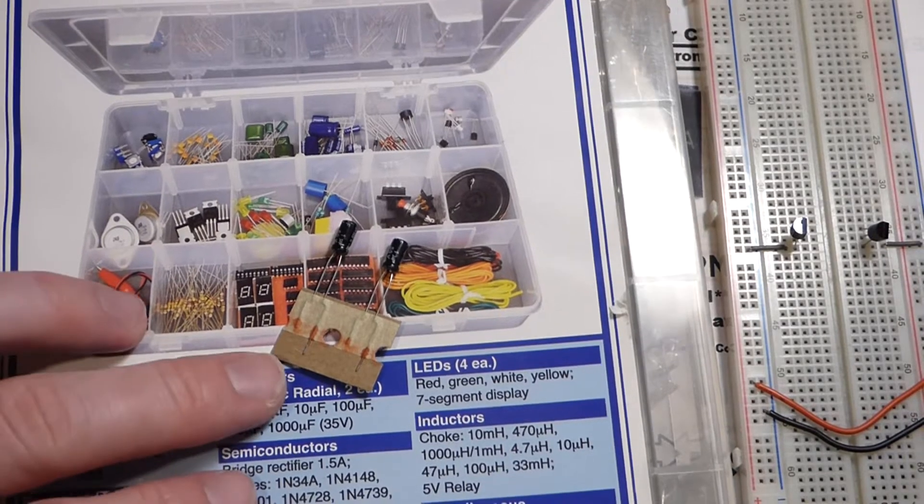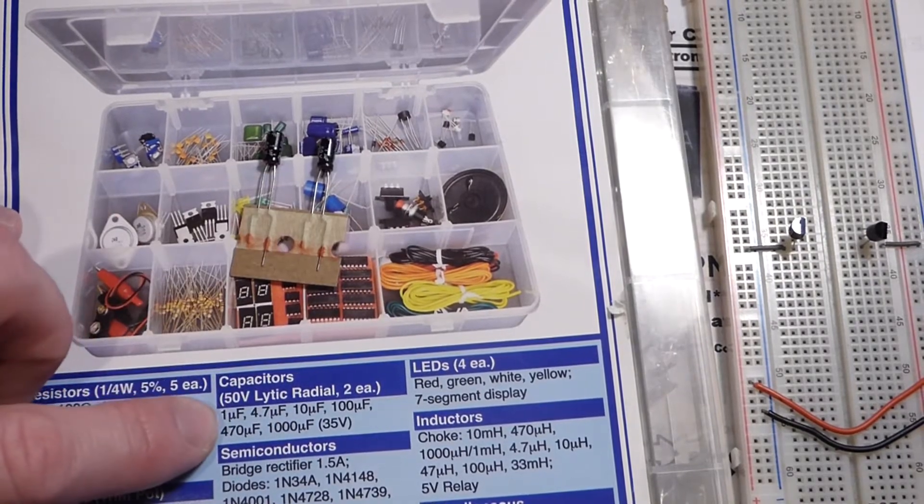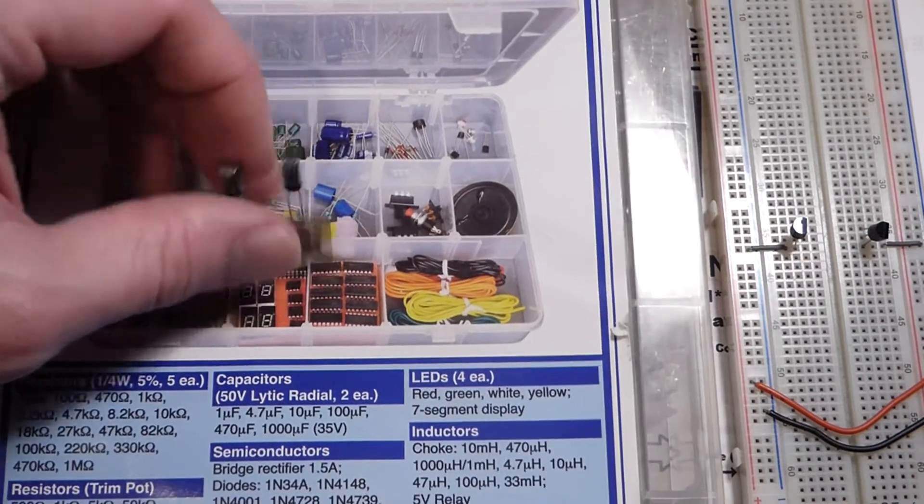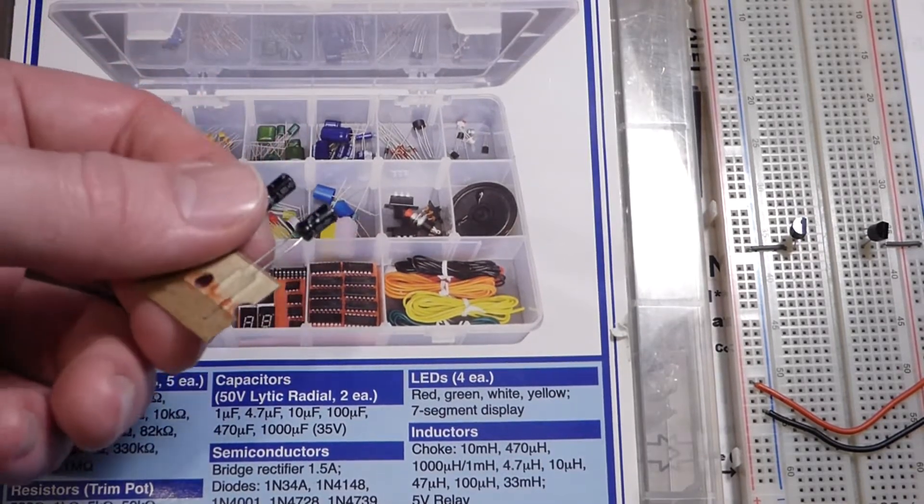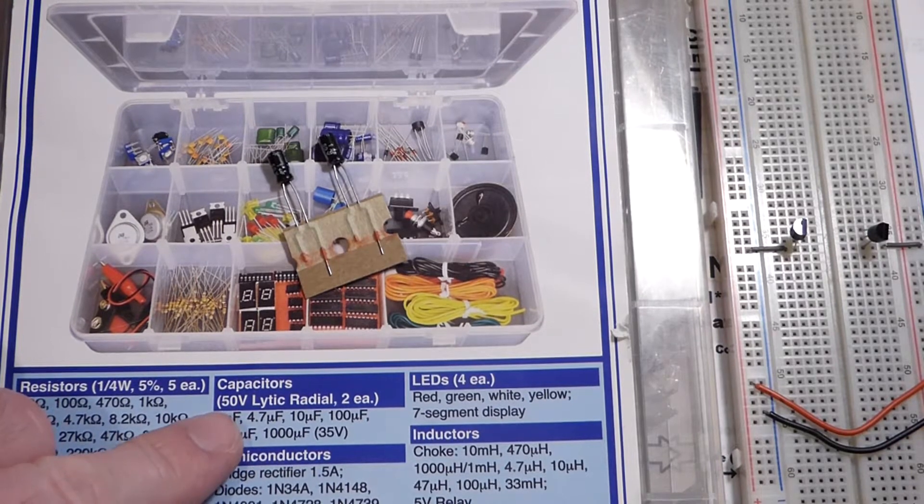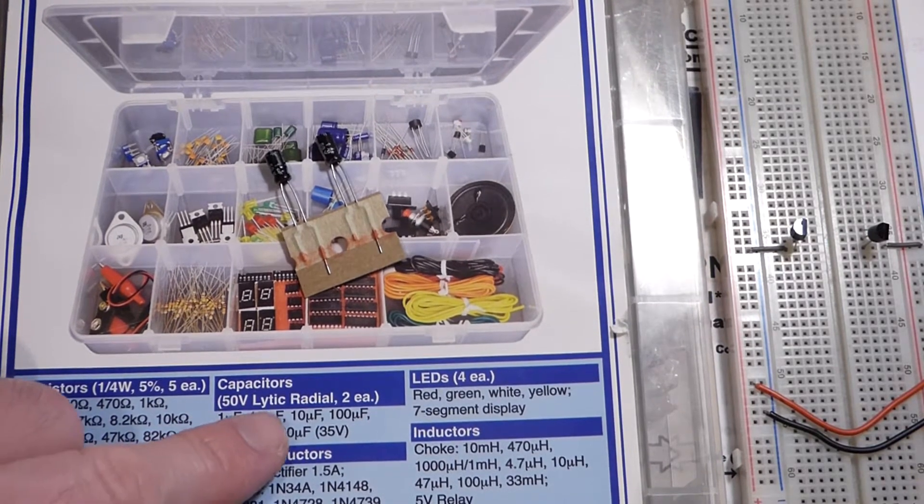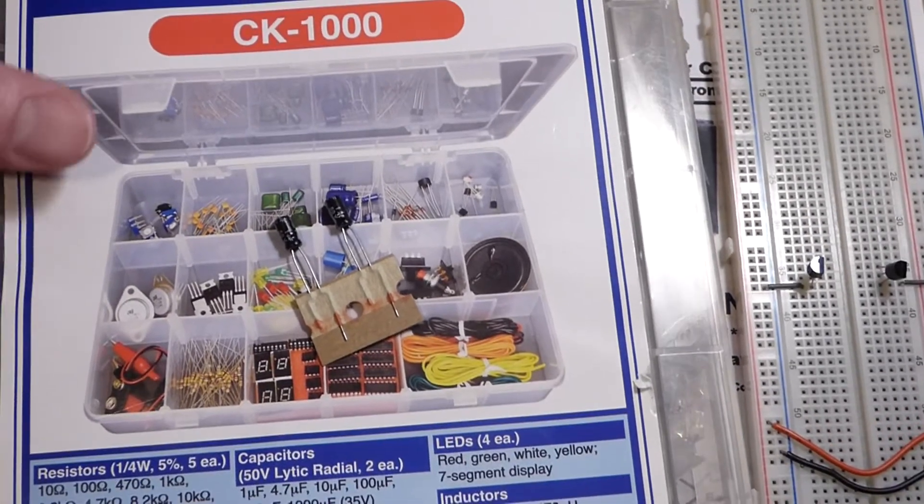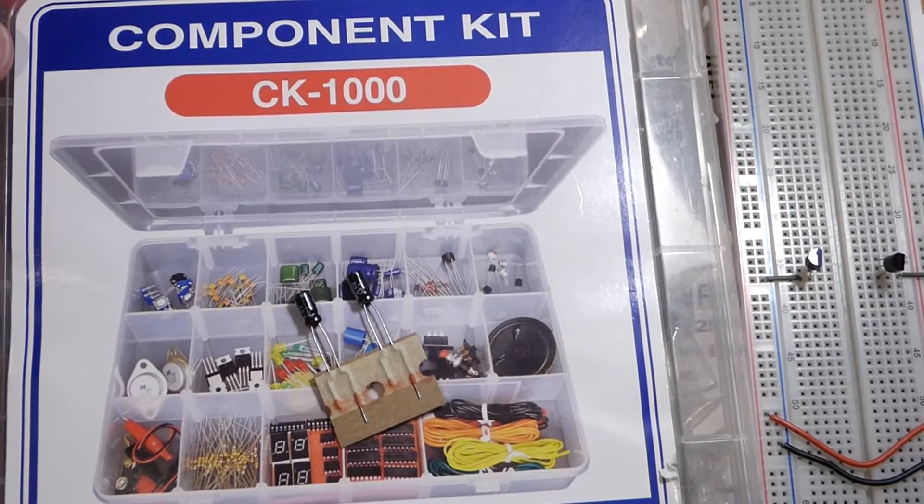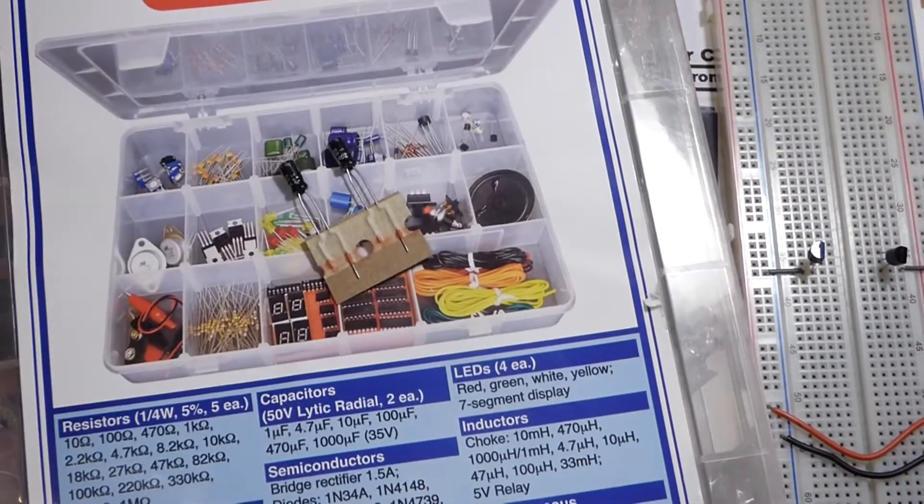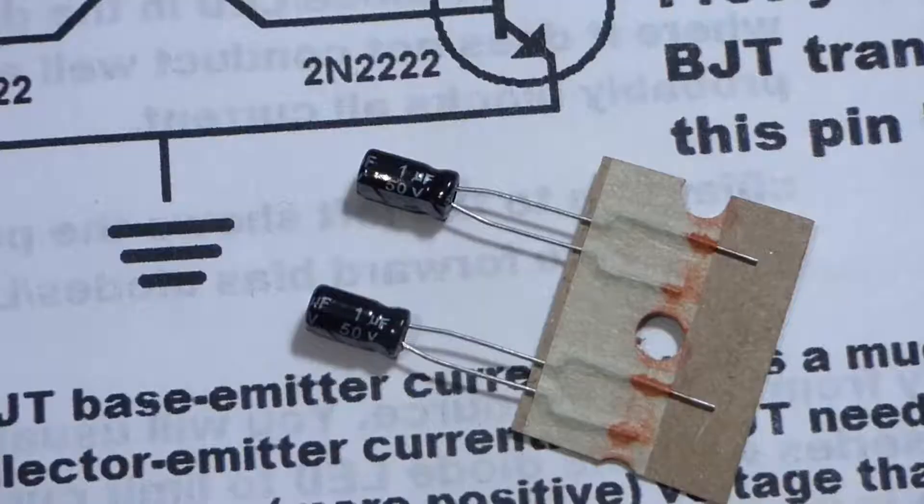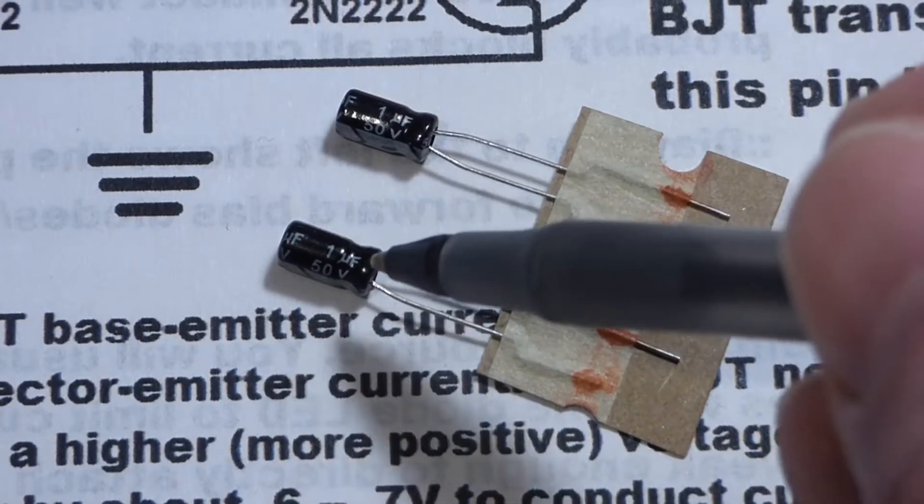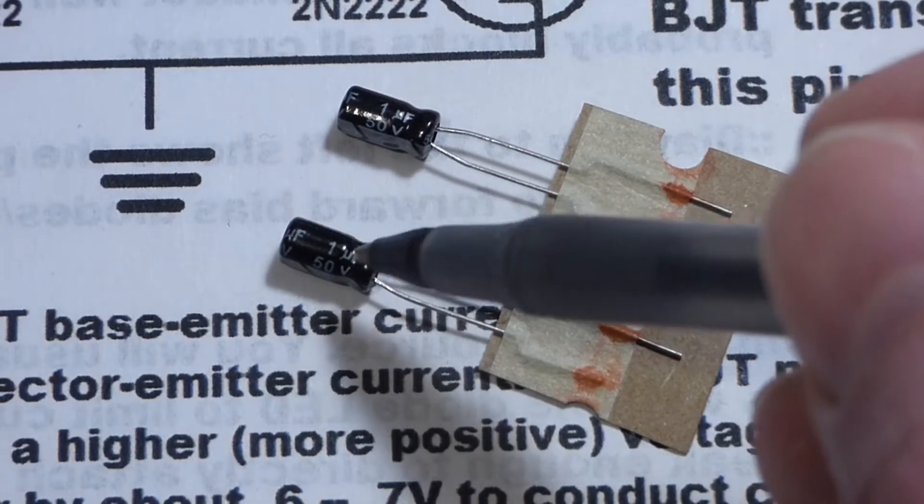There was a specific value of capacitance that was asked about and that was 1 microfarad. I happen to have 1 microfarad. All of the electrolytic capacitors in a can are 50 volt, and it comes out of this kit, component kit CK1000, and it's got a list of the parts there.